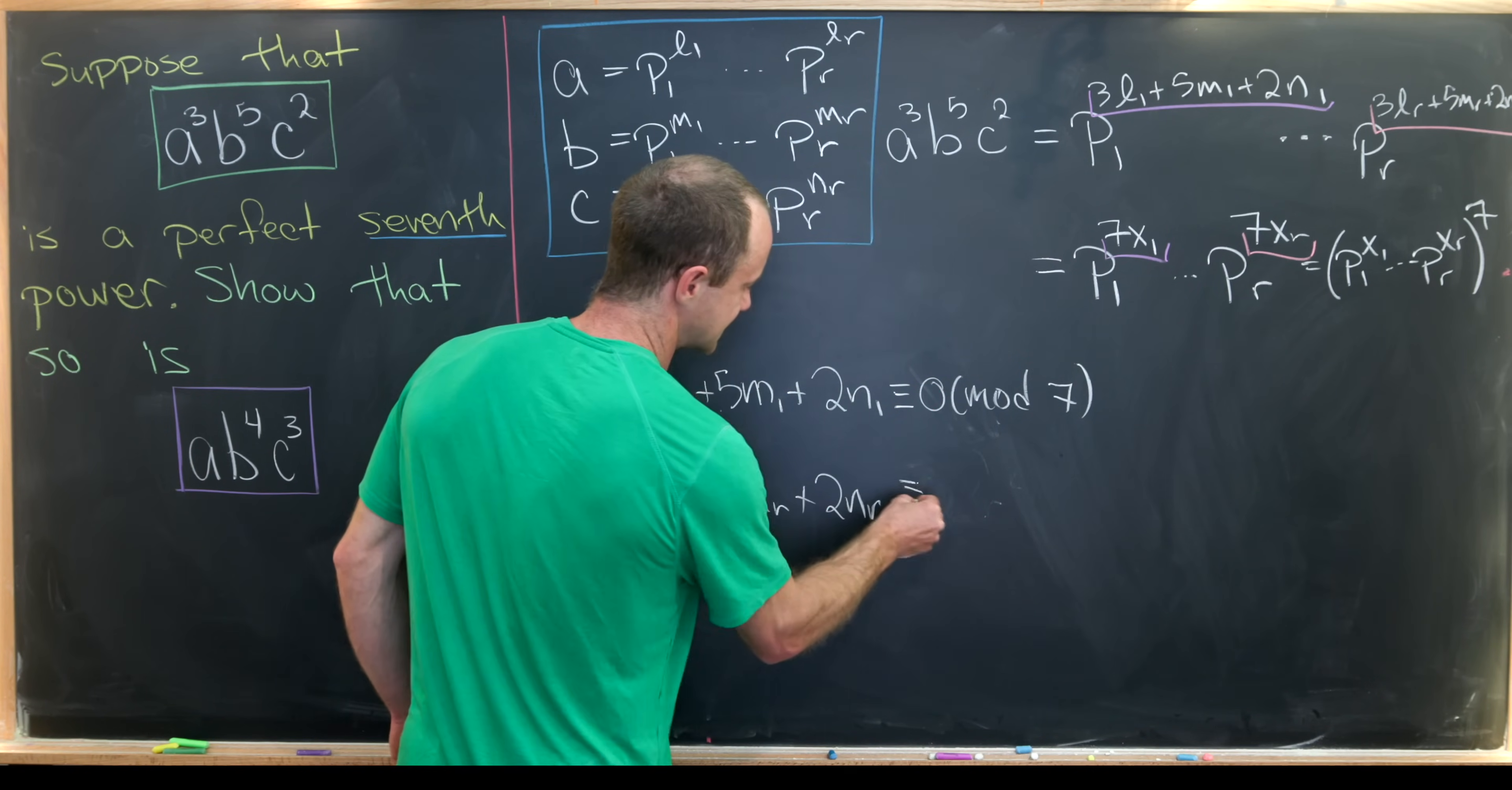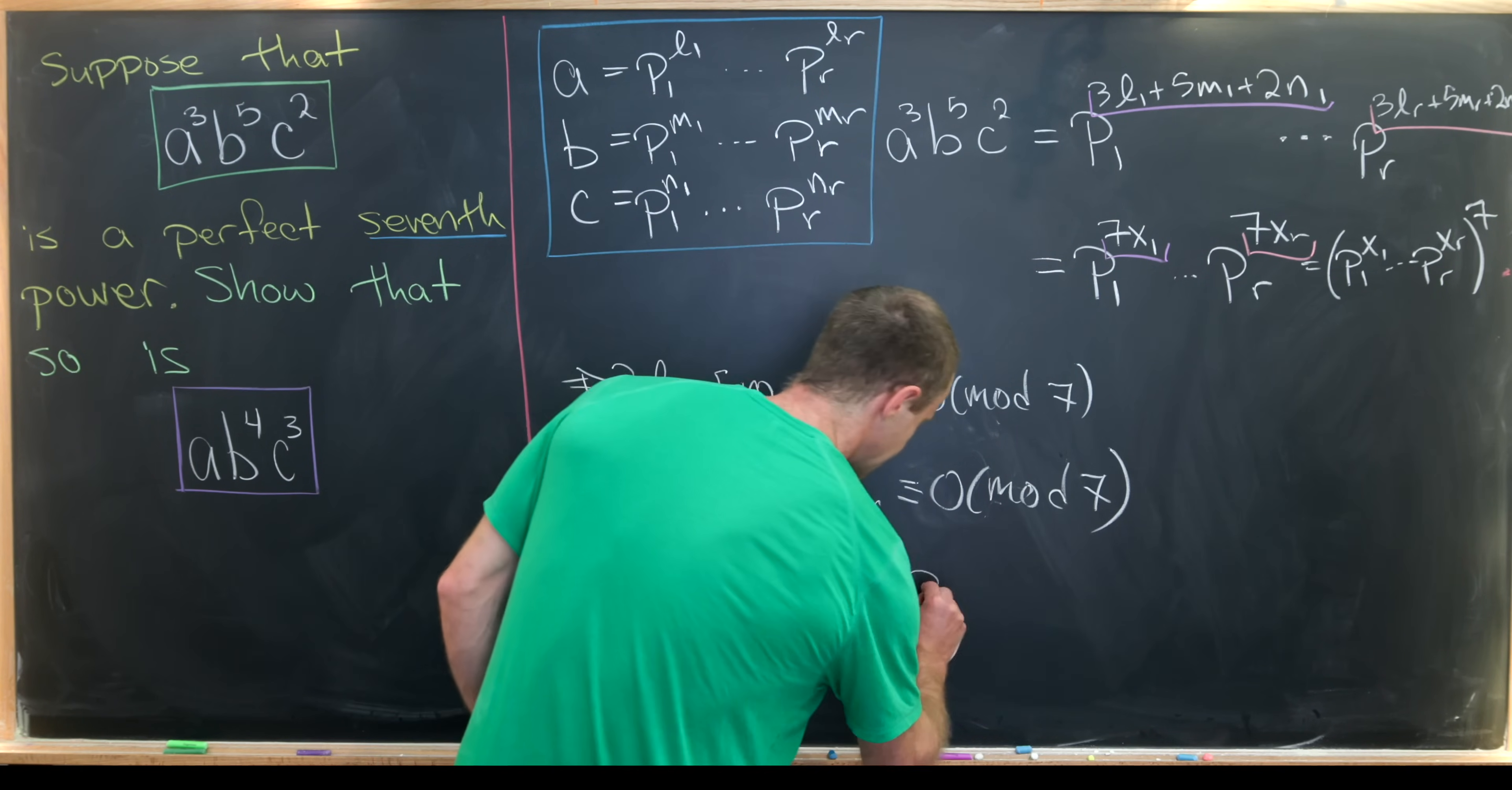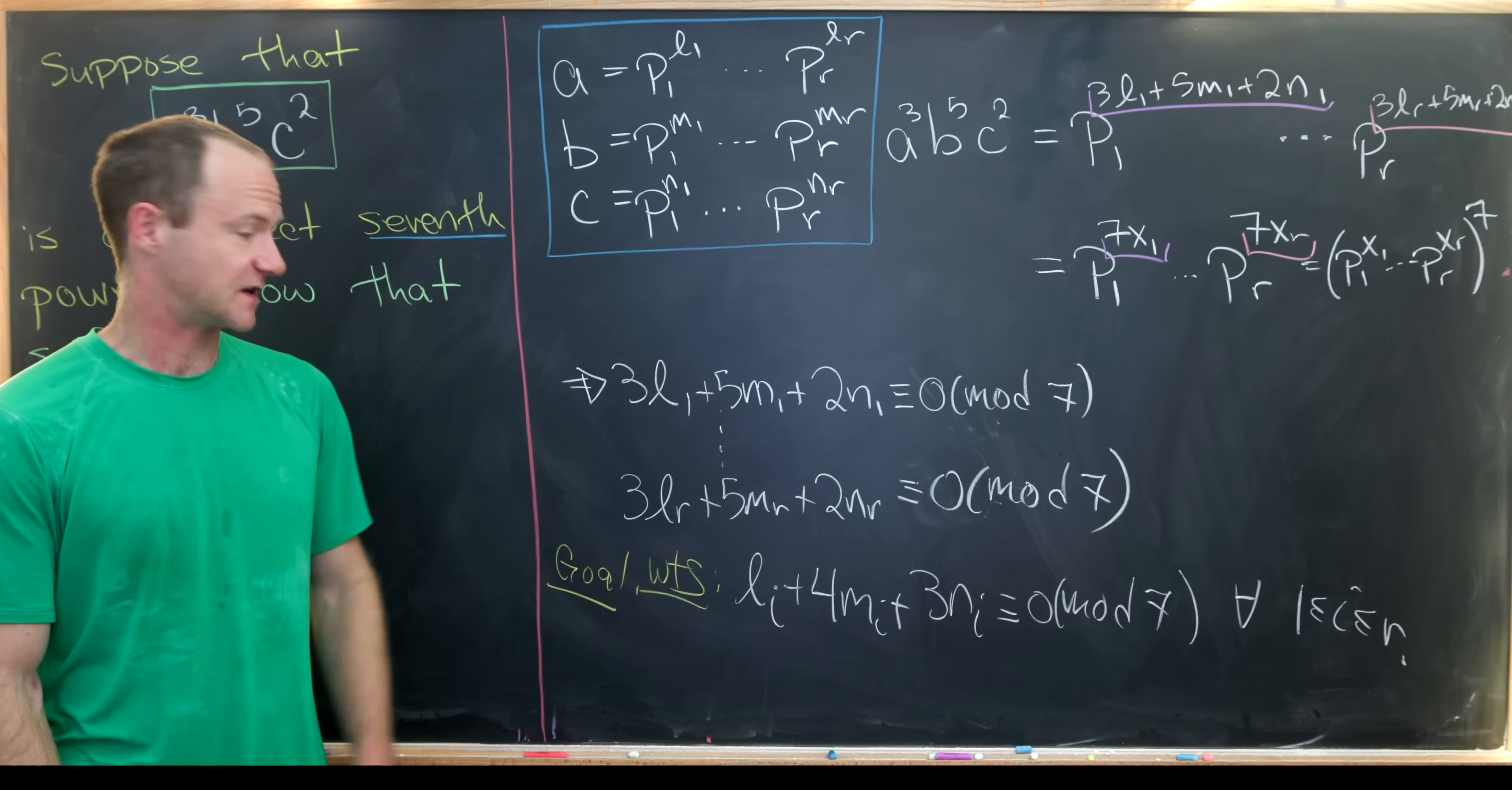And then likewise, this guy is also congruent to 0 mod 7. And let's notice that our goal can be rewritten as a similar congruence. And let's maybe write this goal right now. So we want to show that li plus 4mi plus 3ni is congruent to 0 mod 7 for all i between 1 and r. Why would we need that? Well, following the same kind of path all the way back up here, that'll give us that a times b to the 4th times c cubed is a perfect 7th power.